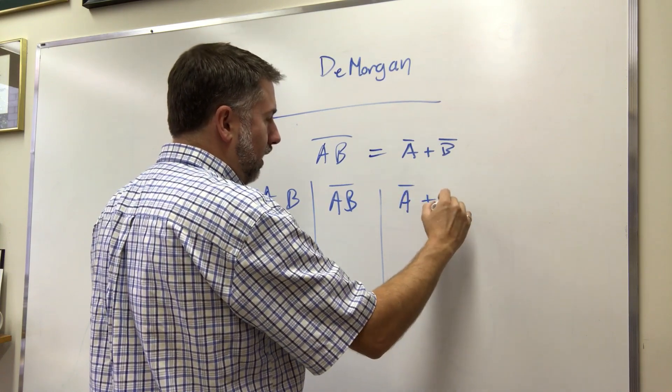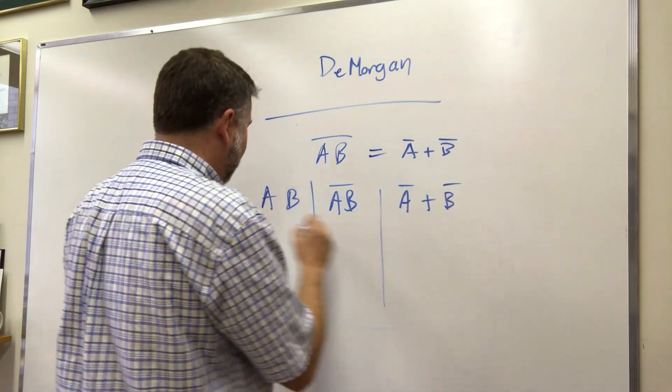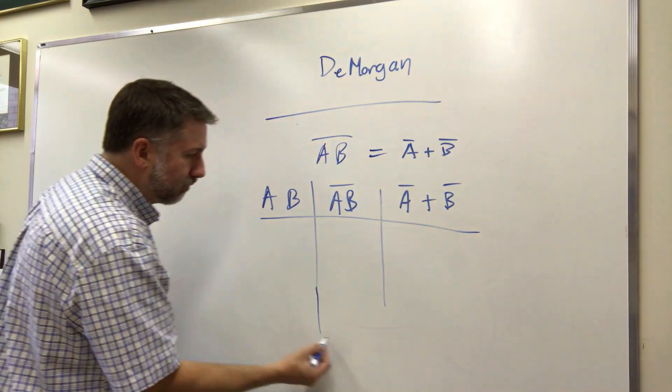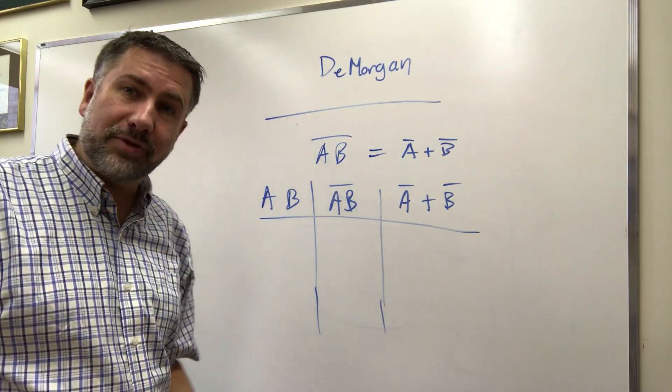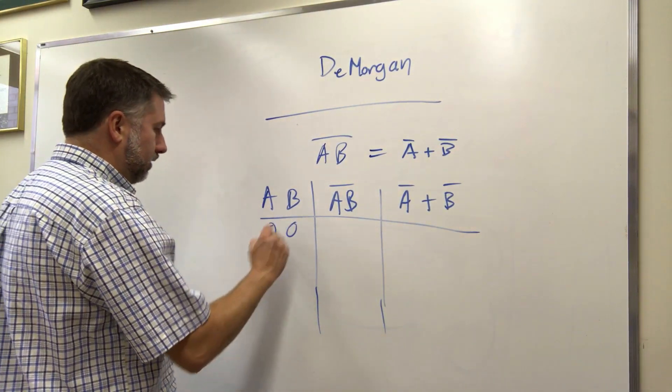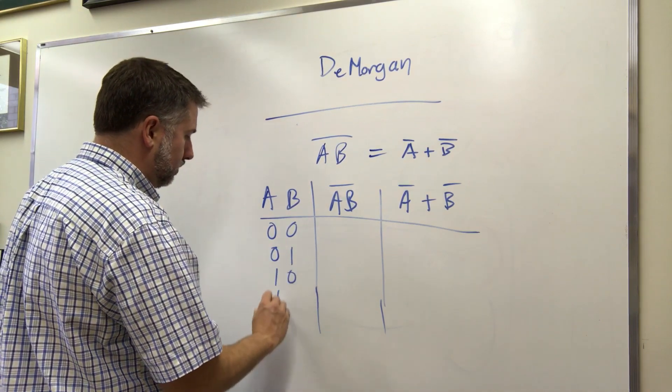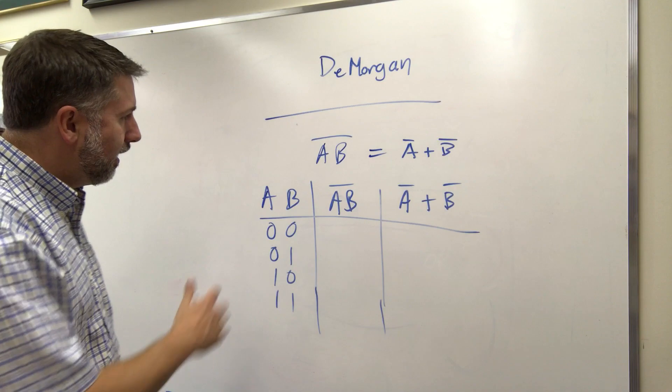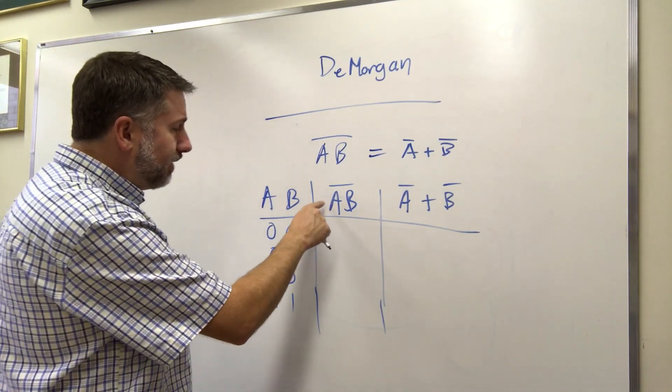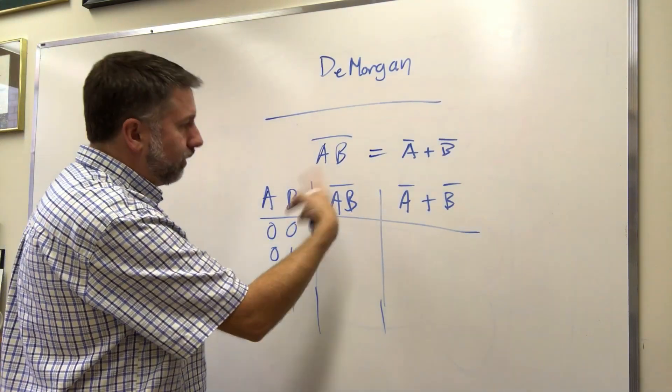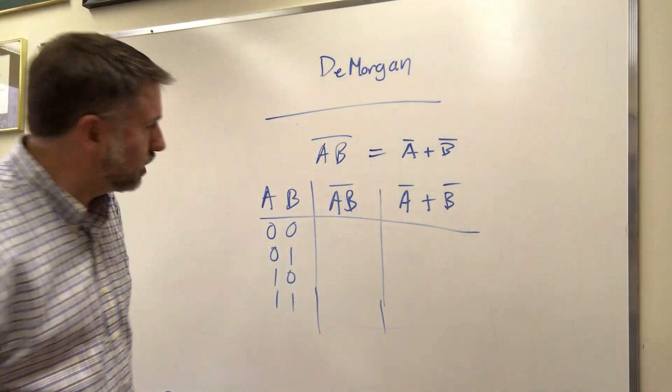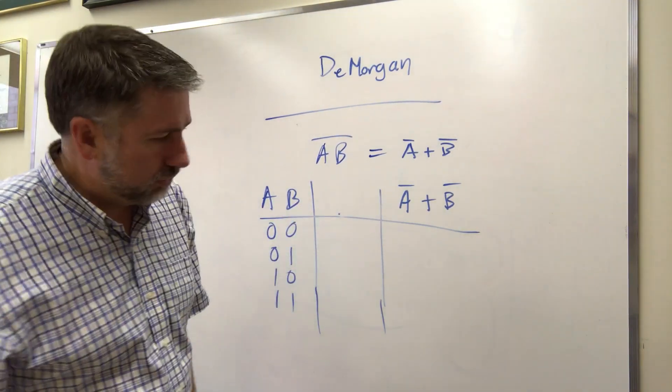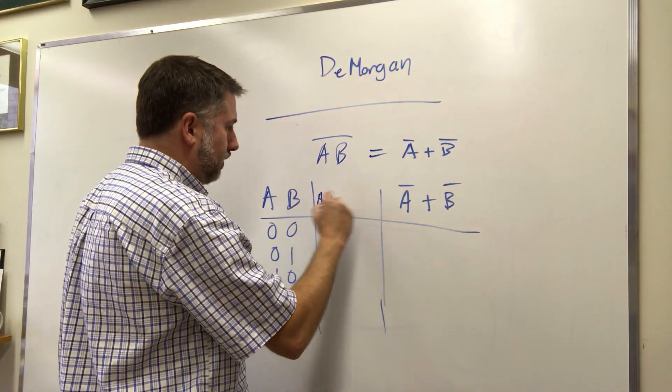So here's A B, and here's A B NAND, and then here's A NOT and OR B NOT. Let's look at these two different functions and prove that they are the same and therefore simplifiable. So again, A B - these are the four possibilities for the inputs A and B.